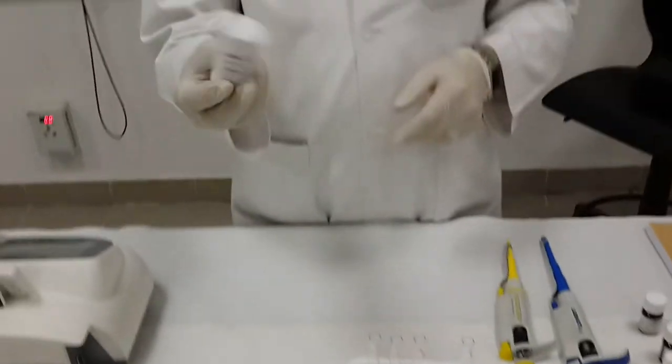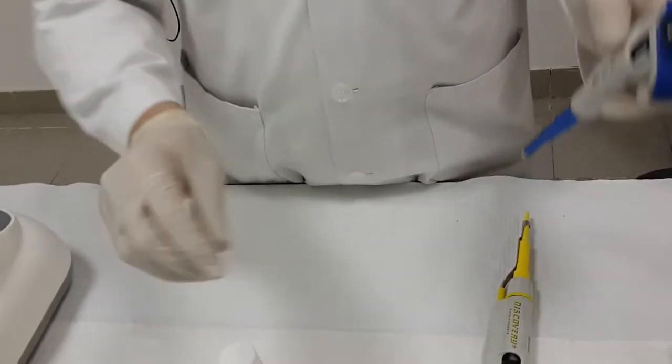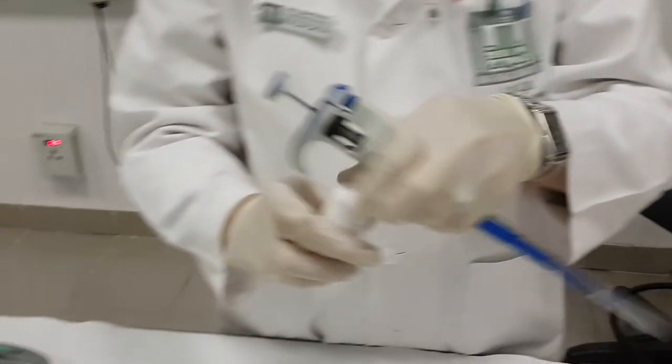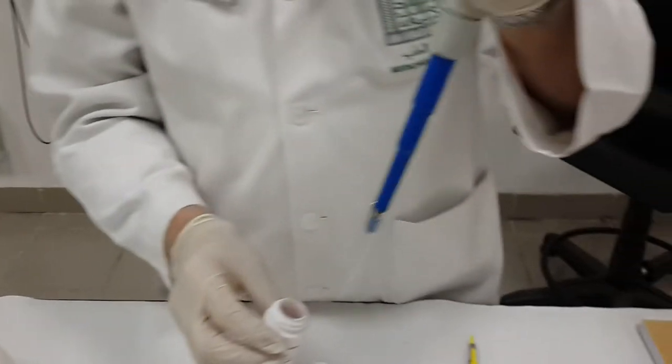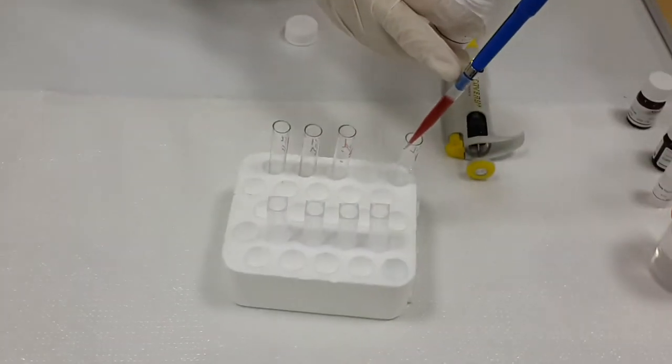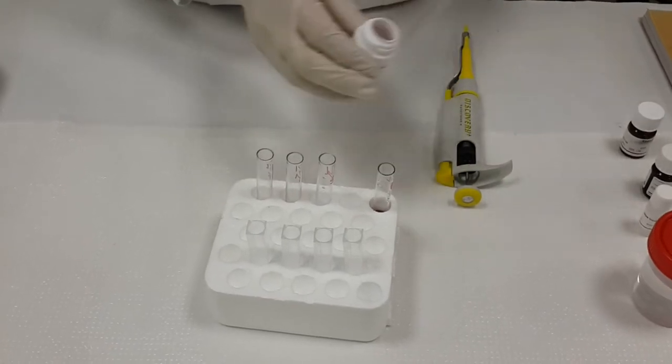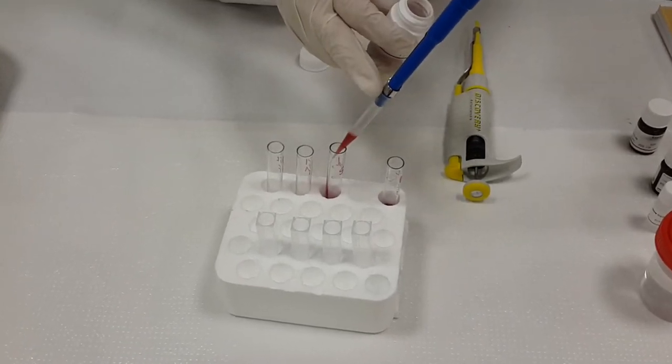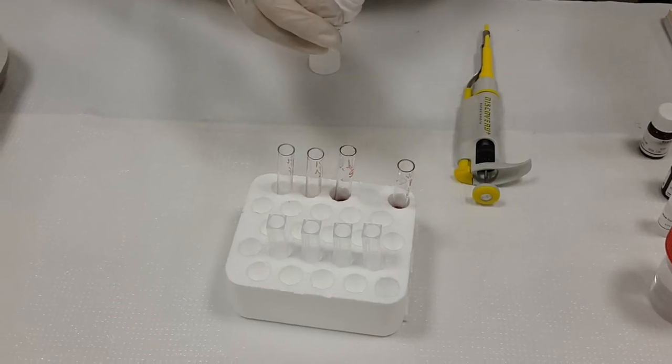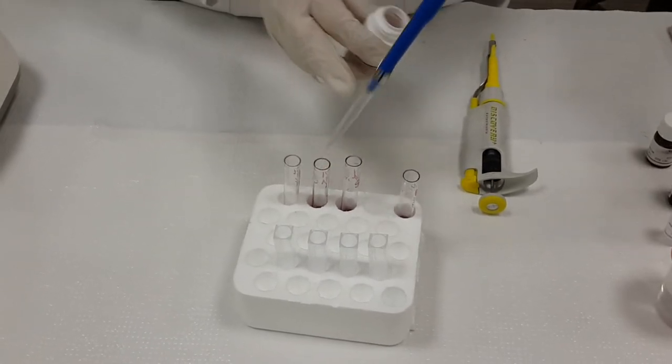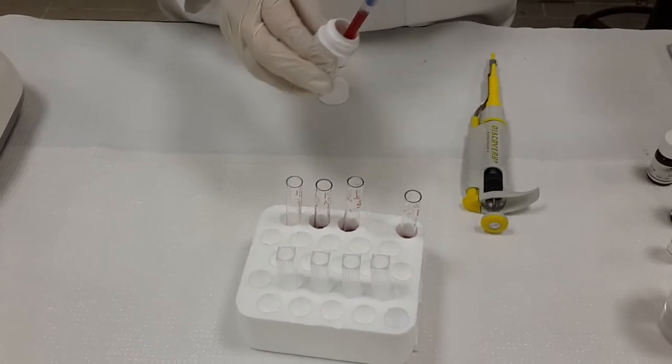Then, as usual, we have to remix the reagent in order if some precipitates are found to be dissolved again, to have a homogeneous solution. Then I will take 1 ml from the reagent and I will put it for all tubes. 1 ml for each tube.